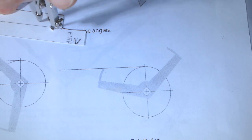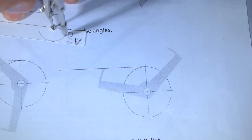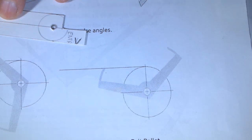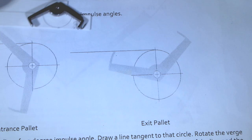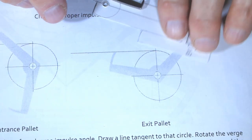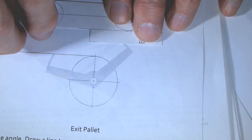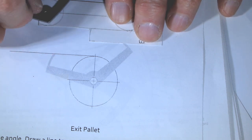Now I will do the same thing for entry pallet. I will make a circle equal to the half of the distance between the middle point of the impulse face of the exit pallet and getting the tangent to define a correct lift angle for the impulse face.